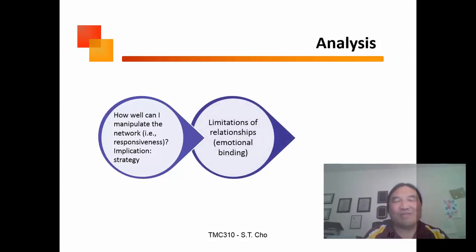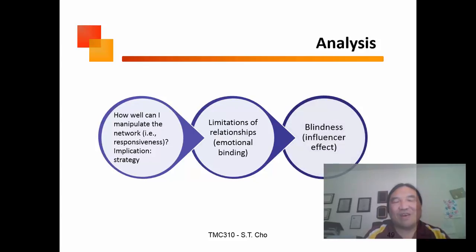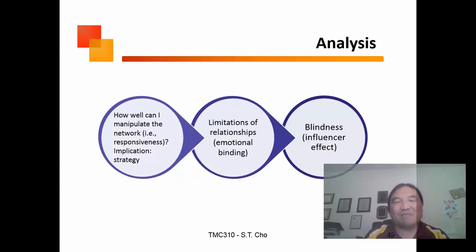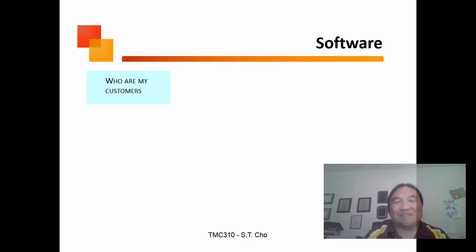If I want to manipulate a network, it's basically about strategy. But the overriding concerns are that there are limited relationships and there could be blindness to the system. That's the influencer effect — you just follow the influencer and don't really pay attention to what's going on.